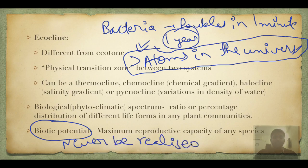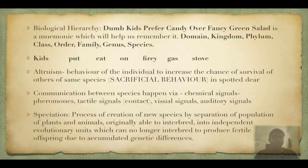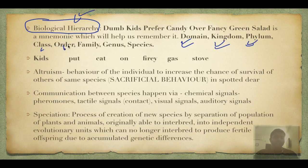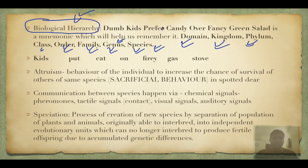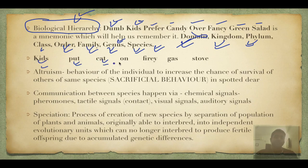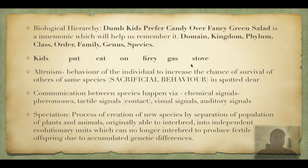The biological classification hierarchy is: Domain, Kingdom, Phylum, Class, Order, Family, Genus, Species. For humans: species is sapiens, genus is Homo, class is Mammalia, phylum is Chordata, kingdom is Animalia, order is Hominidae. Mnemonics to remember: 'Dumb Kids Prefer Candy Over Fancy Green Salad' (with Domain) or 'Kids Put Cat On Fiery Gas Stove' (Kingdom, Phylum, Class, Order, Family, Genus, Species).